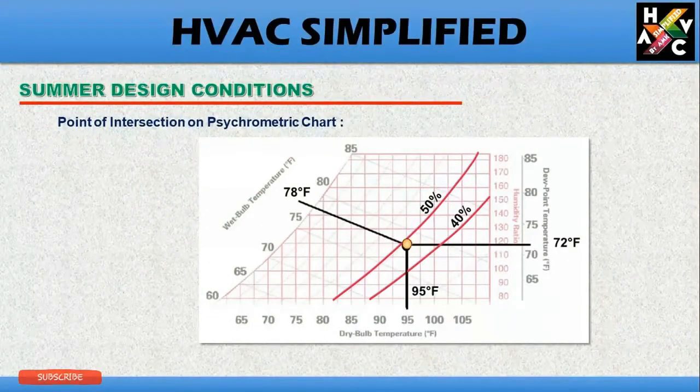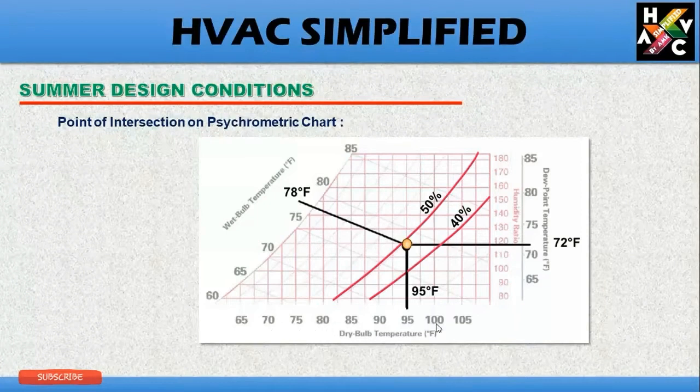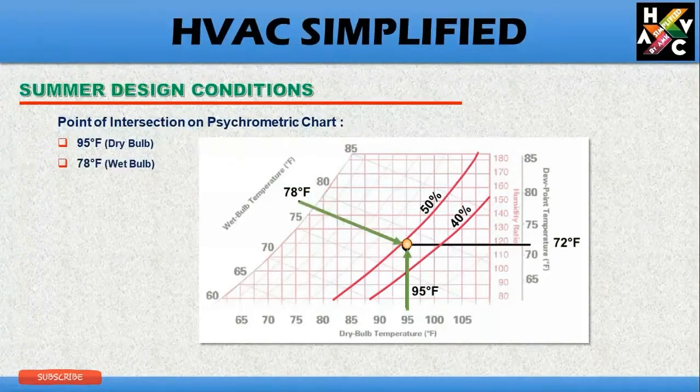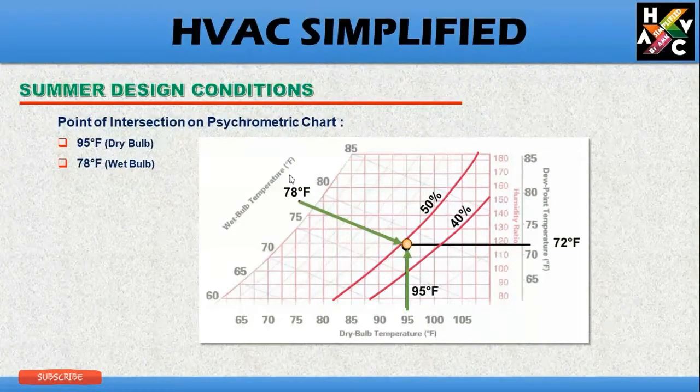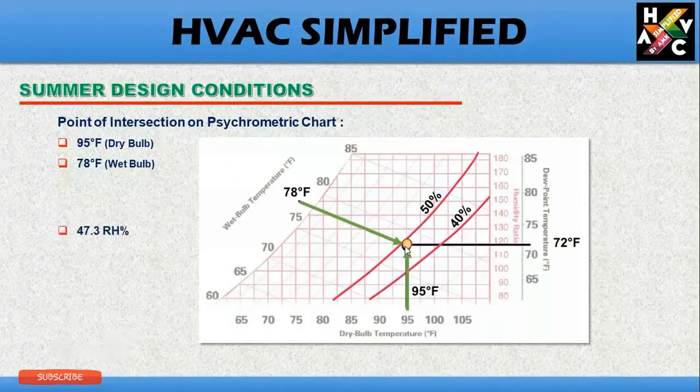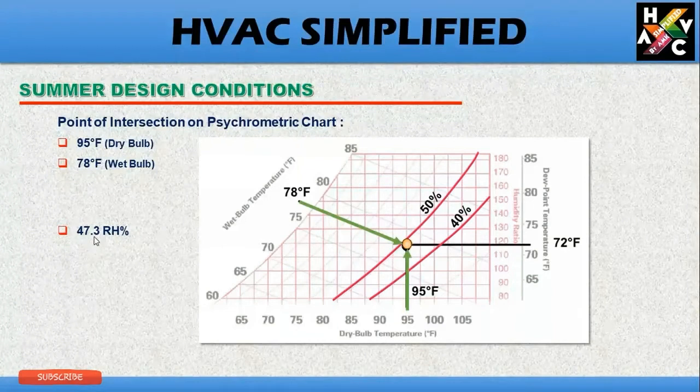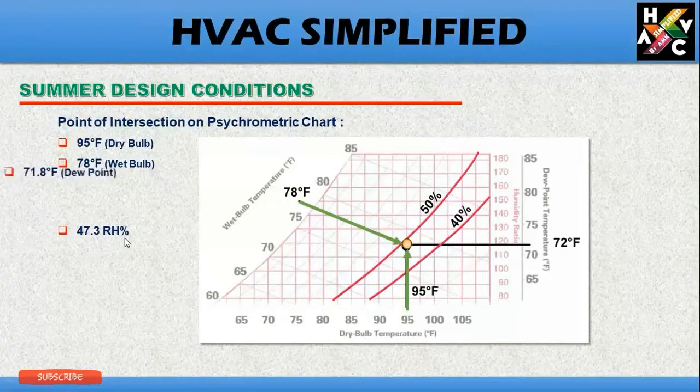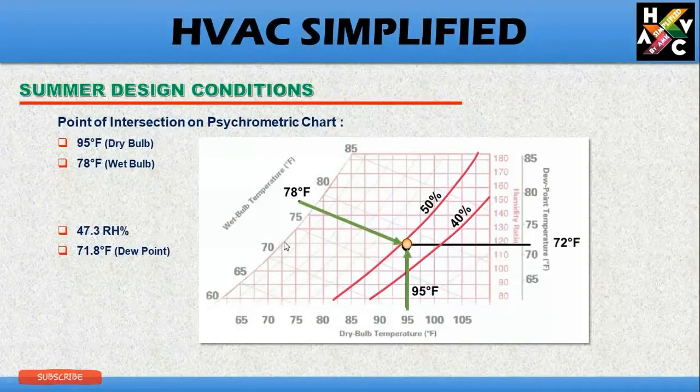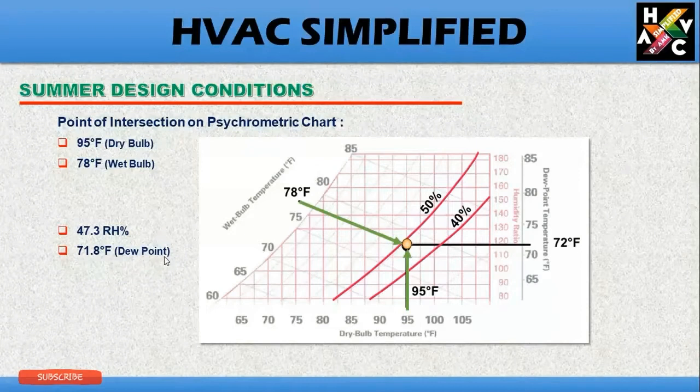Points of intersection on psychrometric chart. The bottom line and the vertical line with the bottom represents the dry bulb temperature as we have seen. So the dry bulb temperature at 95 intersects with the wet bulb temperature at 78 degrees Fahrenheit. So this will be your point of intersection. At this point of intersection you can say your relative humidity is somewhere around 50% and to be exact or precise which is 47.3%. The 71.85 is your dew point. When you go on the left hand side this is your absolute humidity or your dew point temperature, which means at 75.8 degree temperature Fahrenheit the condensation will start.